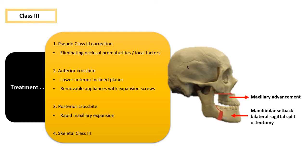For a pseudo Class 3 malocclusion, eliminate the occlusal prematurities or other contributing local factors to establish a normal intermaxillary relationship. Anterior crossbite can be treated with lower anterior inclined planes or removable appliances with expansion screws. Posterior crossbite will require rapid maxillary expansion. In severe skeletal Class 3 cases, the patient must be subjected to either maxillary advancement or mandibular setback — which can be a bilateral sagittal split osteotomy — or a combination of both.